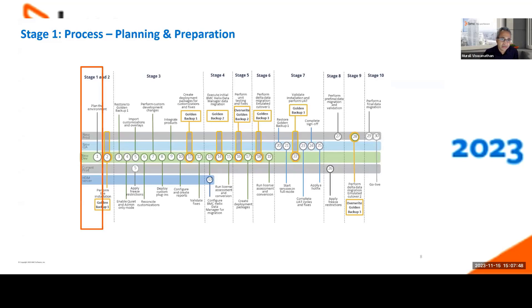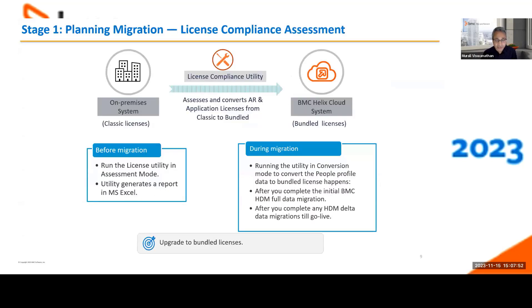Let's look at stage one: planning. The number one thing to think about is license compliance. You have classic licenses in your current production systems, and BMC's cloud offering uses bundle licenses. The License Conversion Utility helps you run an assessment mode before starting your migration project — it assesses your classic licenses and generates an Excel compliance report. You can use that to evaluate your classic licenses and plan how much bundle license you need. Fixed, floating, and suite licenses equate to bundle licenses. The same utility also runs during the migration process in conversion mode, converting classic licenses to bundle licenses for your people profiles.